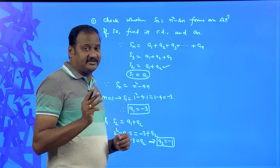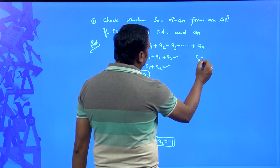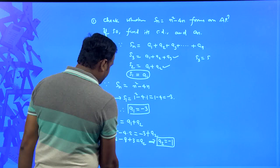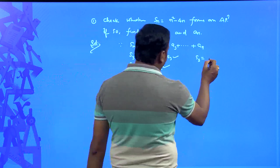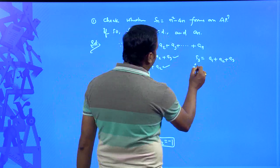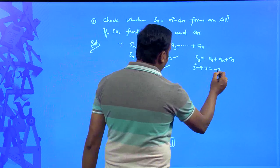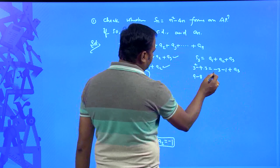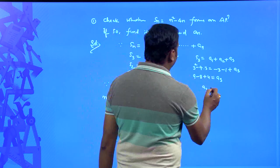Now I need the third term. S3 equals a1 plus a2 plus a3. We can write it as S2 plus a3. Substituting n equals 3: 3 squared minus 4 times 3 equals a1 plus a2 plus a3. So 9 minus 12 equals negative 3 plus negative 1 plus a3. That gives 1 plus 4 equals a3. Wait — 9 minus 12 equals negative 3, and negative 3 minus 1 is negative 4, so negative 3 equals negative 4 plus a3, giving a3 equals... let me recalculate. 9 minus 12 equals negative 3 plus 4 equals 1, so plus 4 equals a3. See: 9 minus 8 equals 1 plus 4 equals 5, therefore a3 equals 5.